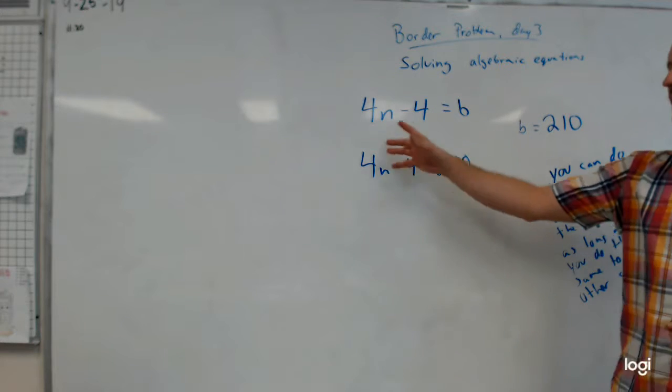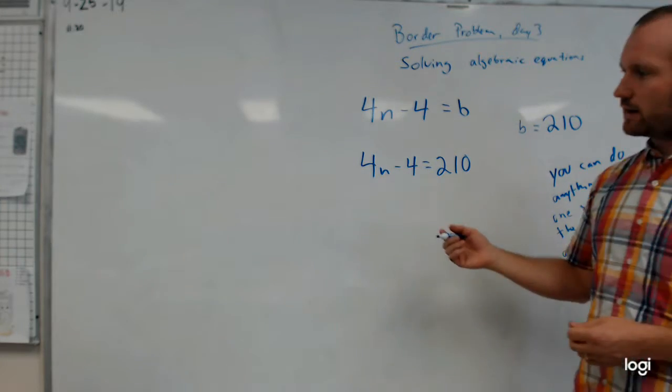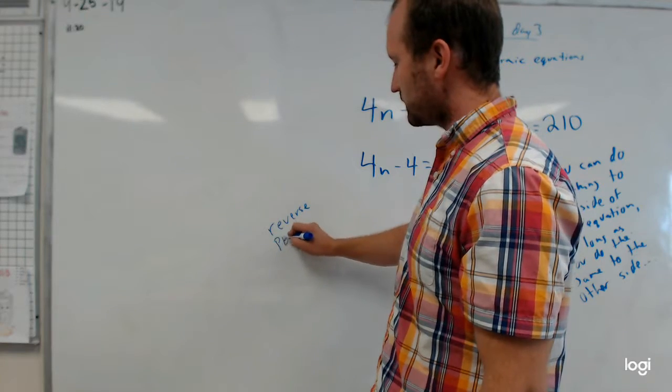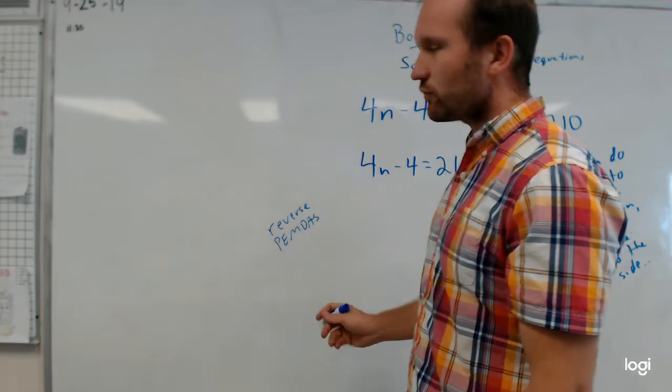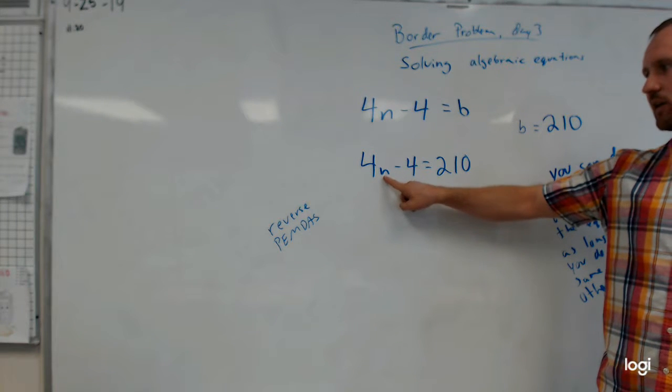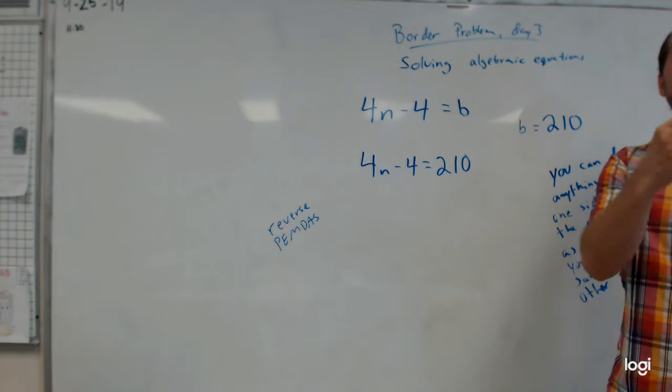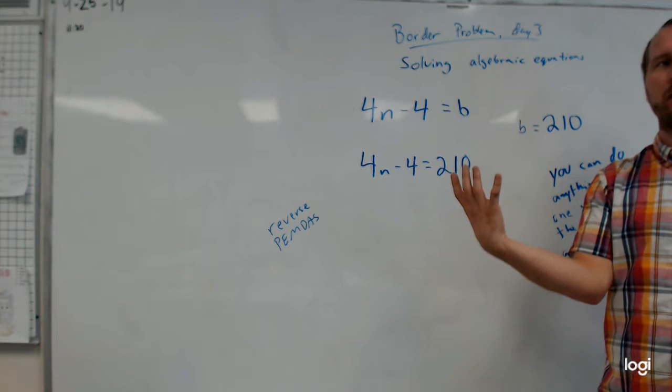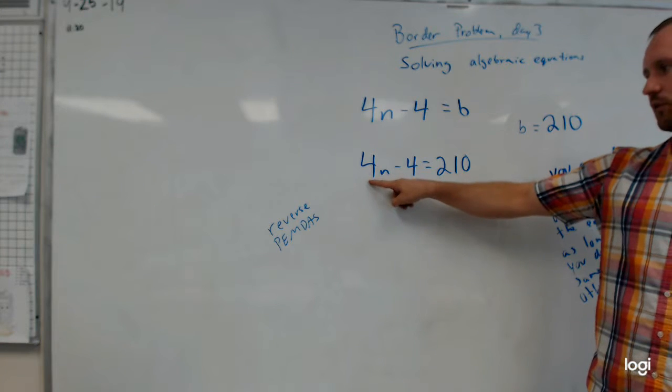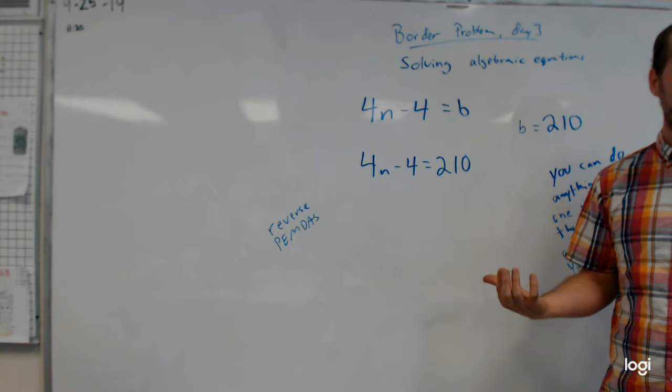And so with an equation that's kind of in this form, the way that I think about solving it is I kind of think of reversing PEMDAS. And there's a reason for this. My goal is to get the variable all alone here. I want to get n all by itself. I want to find out n equals some number. So in order to do that I have to get rid of this four right here. I have to get rid of this four right here. But which one do I get rid of first and why?